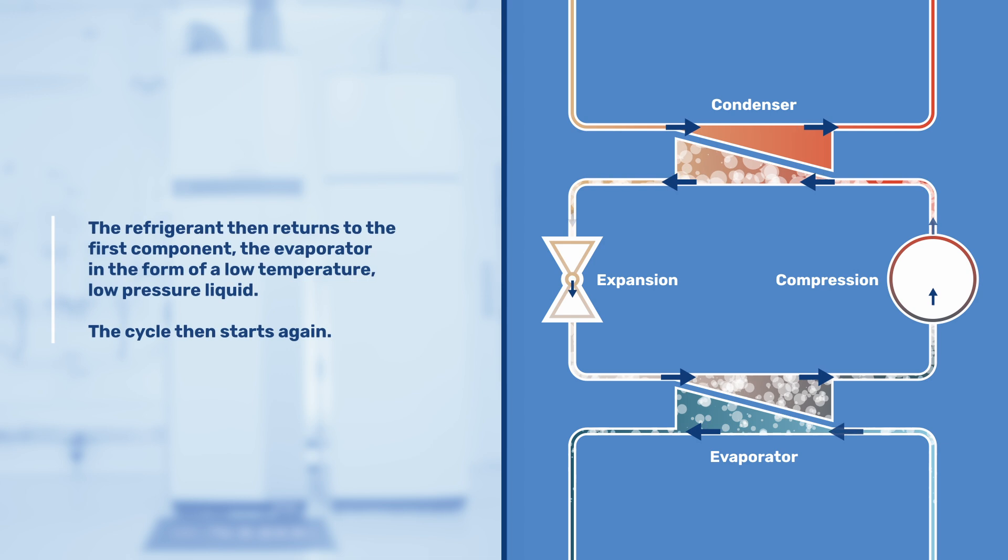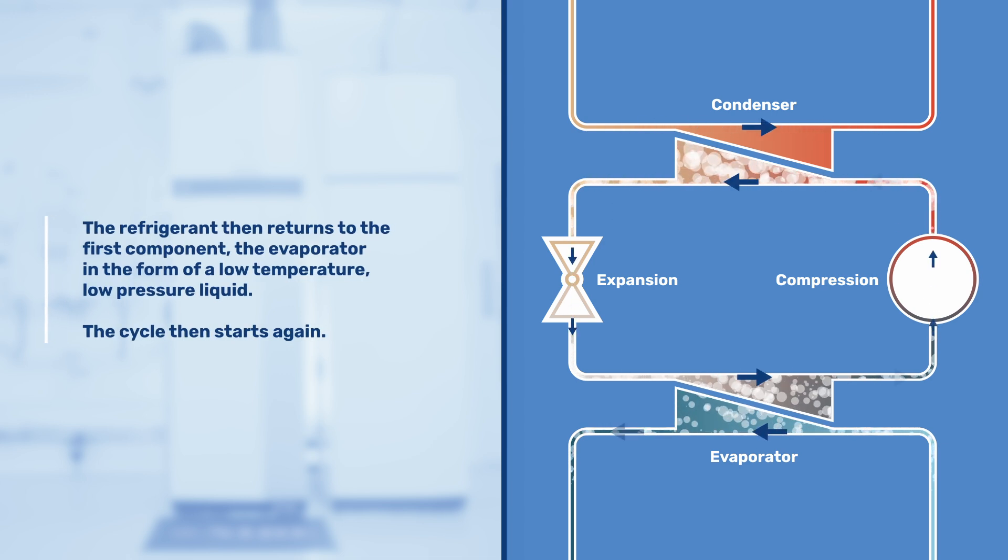The refrigerant then returns back to the first component, the evaporator, in the form of a low temperature, low pressure liquid. The cycle then starts again.